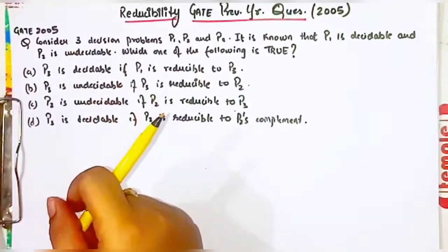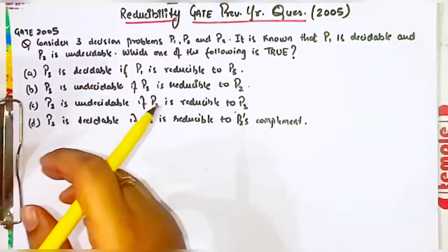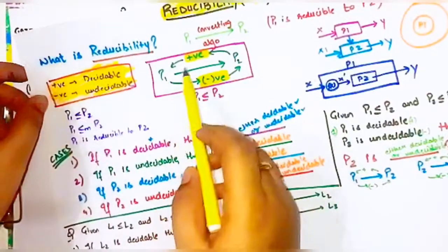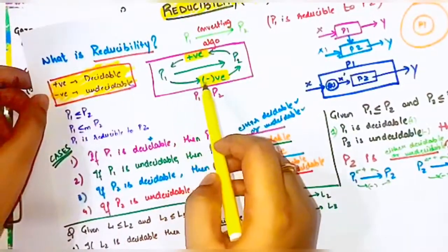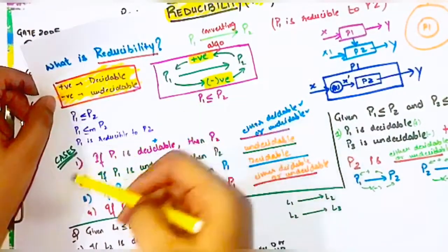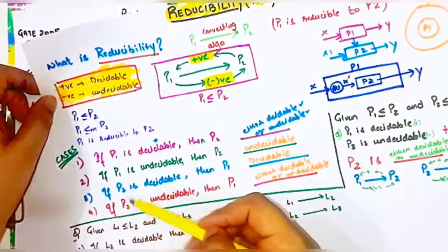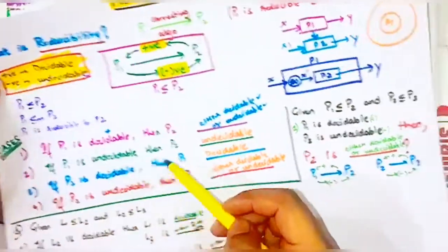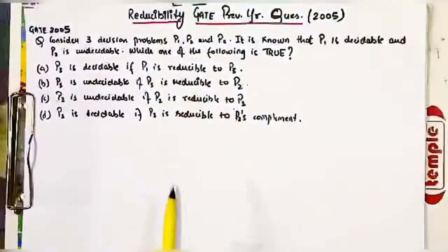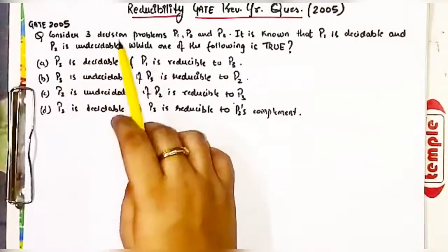As in the previous video, I explained the concept of positive and negative thing. If P1 is decidable, these four cases were explained, and on the basis of these four cases you will be able to solve all the questions. So let's solve this question now.